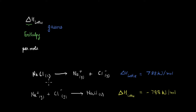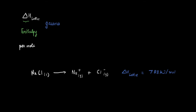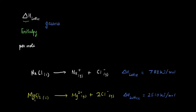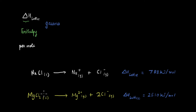In numerical problems you have to be careful about the sign of the enthalpy depending on whether the lattice is being formed or dissociated. Taking another example, MgCl₂ (magnesium chloride) dissociates into magnesium ions and chloride ions, and the lattice enthalpy for this reaction is also positive because you are providing energy to break the ionic bonds.